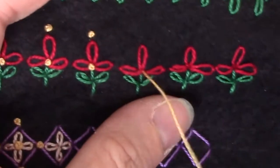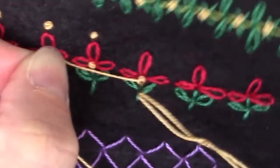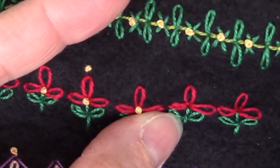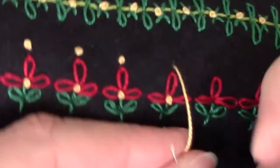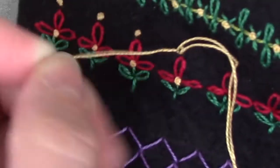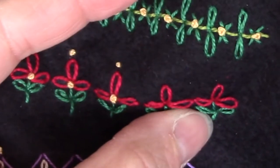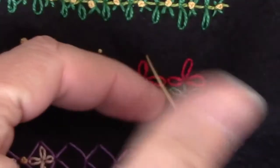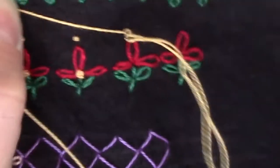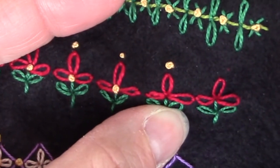To finish this combination off, we're coming back and working colonial knots in the center of our group of red and also one right above the pedal that is going straight up. Now, if I was working on something that was see-through, I would either be knotting off or I would be weaving my threads in on the back. But since I'm working on felt and this is not going anywhere but on a video, I'm just going to jump from spot to spot in the interest of time.